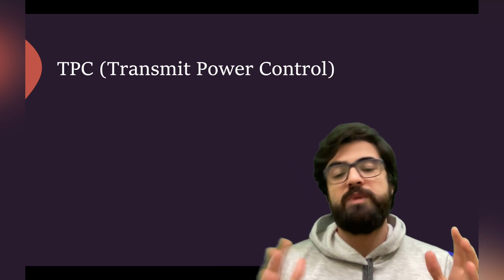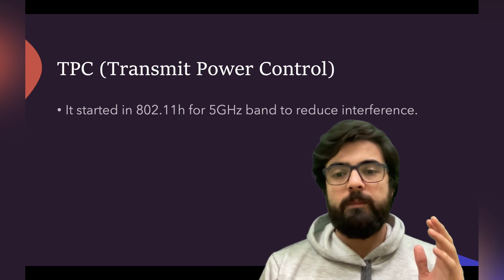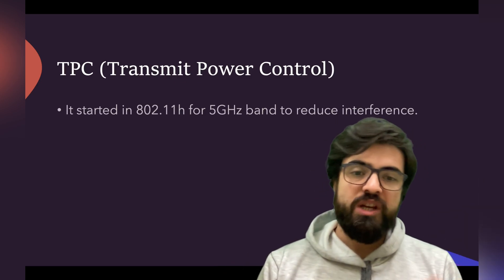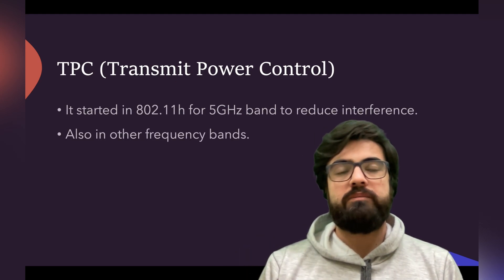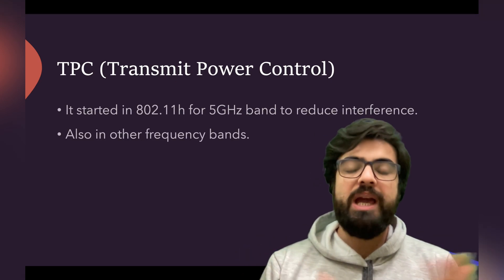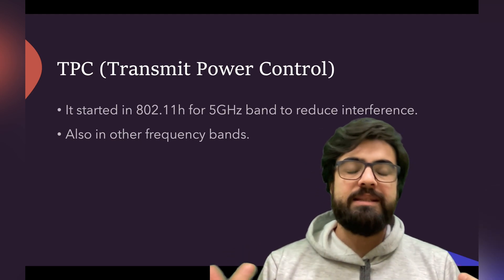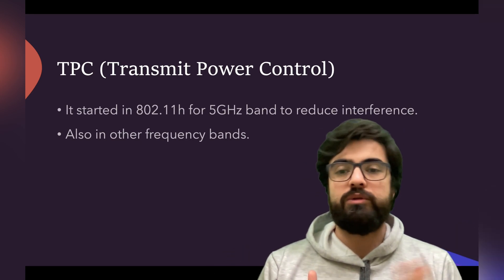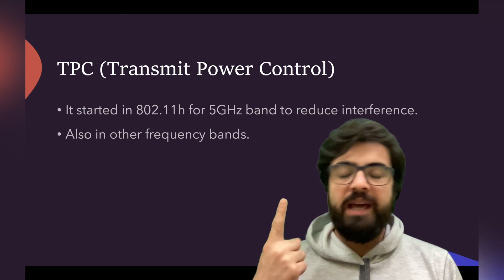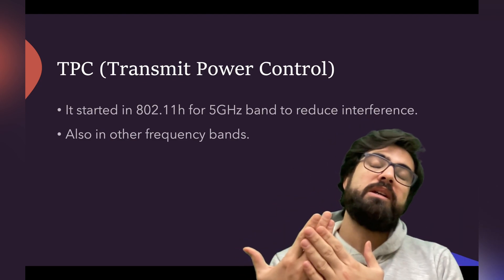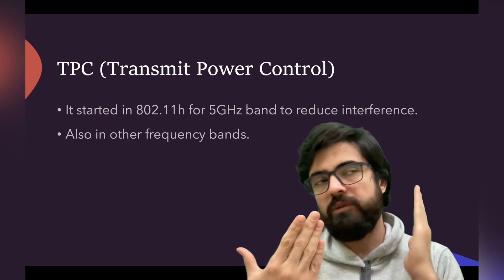The first category is TPC — Transmit Power Control. It originated in 802.11h and was designed to reduce interference. In the 802.11k amendment, TPC applies to all frequency bands. It is also sometimes called ATPC, Automatic Transmit Power Control.